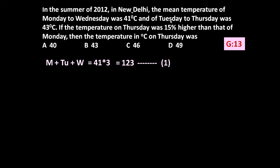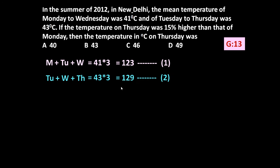Now the mean temperature of Tuesday to Thursday — that is Tuesday, Wednesday, and Thursday — was 43 degree Celsius. So the total temperature of Tuesday, Wednesday, and Thursday was 43 into 3, which is 129. This is equation number two.